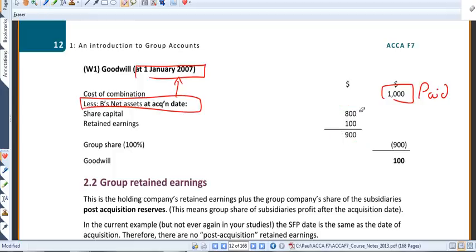And therefore, we paid 1,000 for a company that was basically worth 900. The difference between those figures we're going to call goodwill.